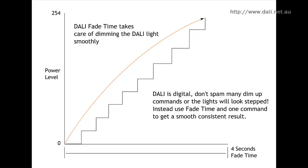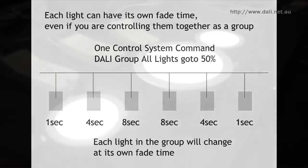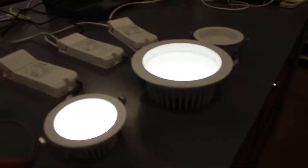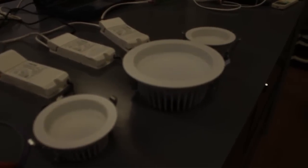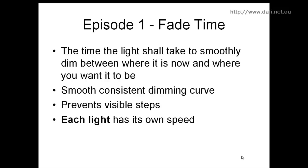The other really cool thing is every ballast can have its own speed. That can actually allow you to have one simple command — lights turn on, or lights turn off — but have different speeds to create different effects for special situations. With DALI, any system that has a DALI component can do this.